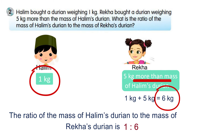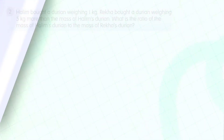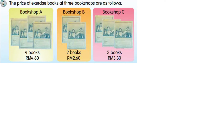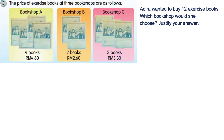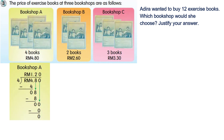Look at example three. The prices of exercise books at three bookshops are as follows: Bookshop A — four books for four ringgit eighty cents. Bookshop B — two books for two ringgit sixty cents. Bookshop C — three books for three ringgit thirty cents. Adira wanted to buy 12 exercise books. For Bookshop A, the price of one book is four ringgit eighty cents divided by four, which equals one ringgit twenty cents. Multiplied by 12, the total is fourteen ringgit forty cents.